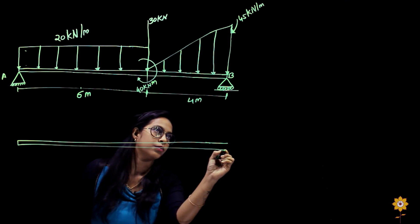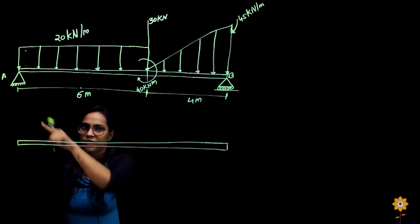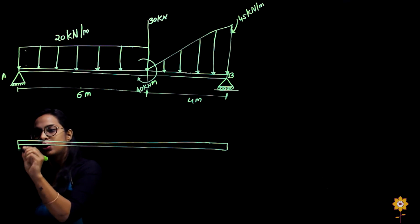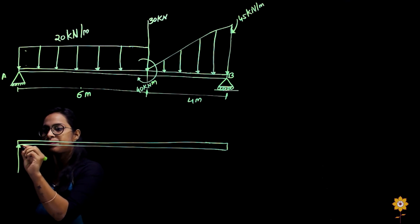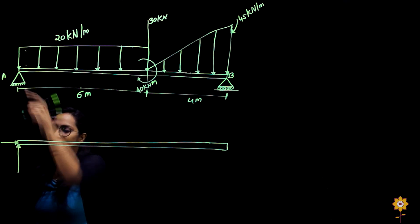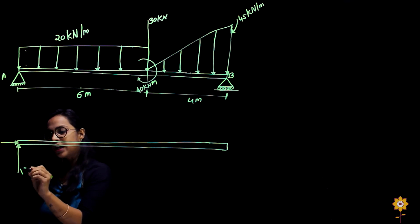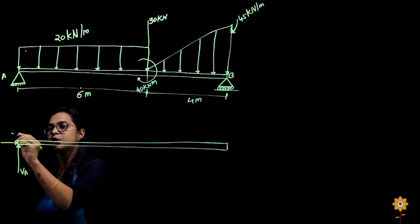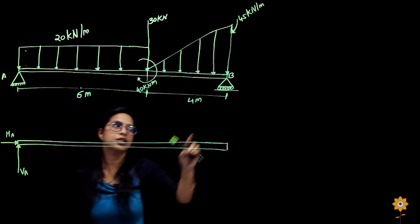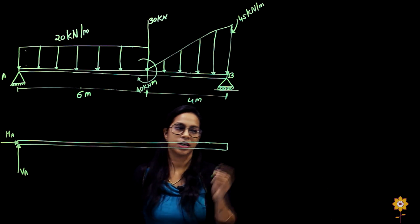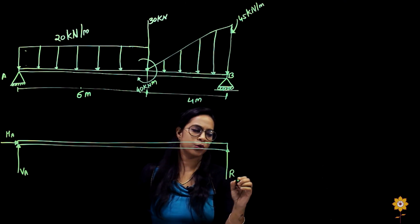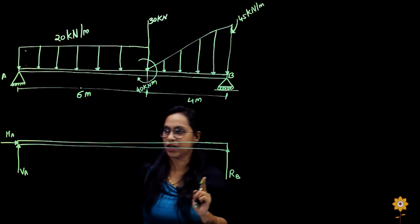I will draw the beam again. Here we have a fixed support. For this kind of support, we have two reactions — the vertical and horizontal reactions. For A, the vertical reaction is named VA and the horizontal reaction is named HA. At the other end, there is a roller support, which will only have a vertical reaction. We can name it VB or RB since it has only one reaction force.